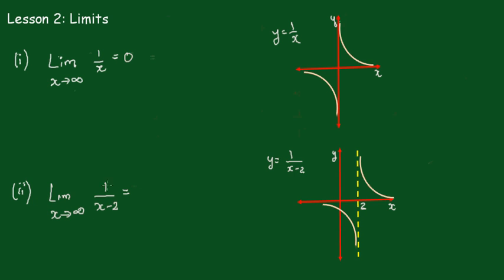In the other case, x cannot equal 2, so if we draw the graph of this we can see there's an asymptote at x equals 2. But it's still the same — as x becomes very very large, the minus 2 will have no effect, because a very large number take away 2 is still an extremely large number.